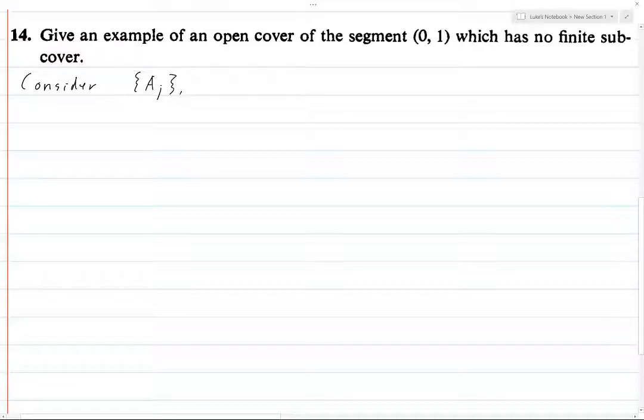A j from 1 to infinity, where each a j is, and this is of course j equals 1 to infinity, a j is going to be the open interval from 2 to the minus j to 1.